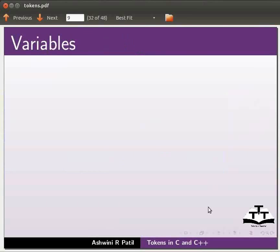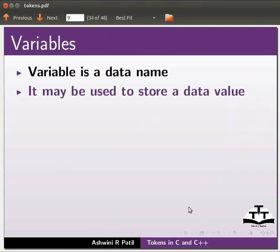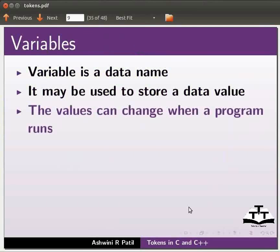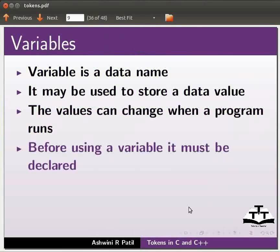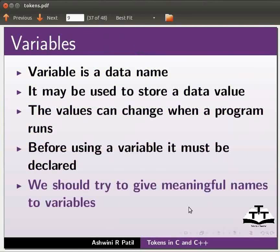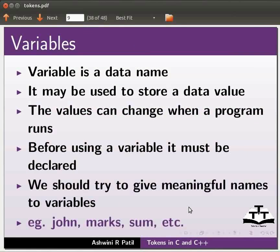Now, we will move on to variables. Variable is a data name. It may be used to store a data value. The values can change when the program runs. Before using a variable, it must be declared. We should try to give meaningful names to variables. Example, John, Marks, Sum, etc. Now, we will move back to our program.